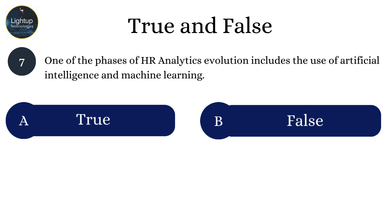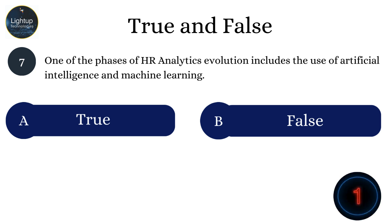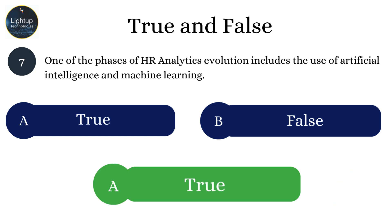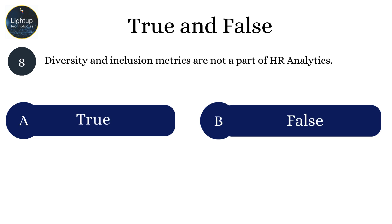Seven: One of the phases of HR analytics evolution includes the use of artificial intelligence and machine learning. Eight: Diversity and inclusion metrics are not a part of HR analytics.